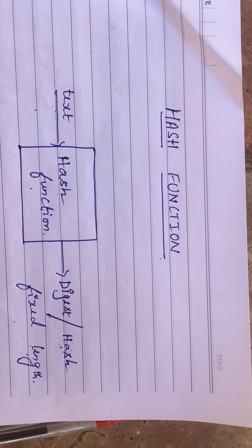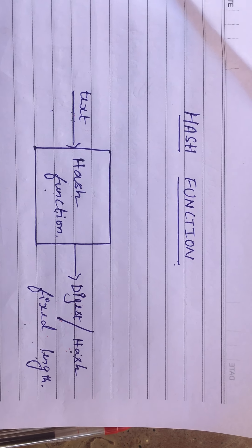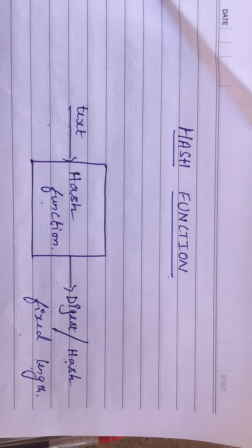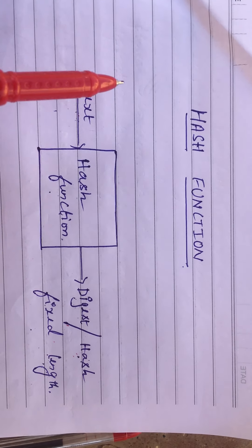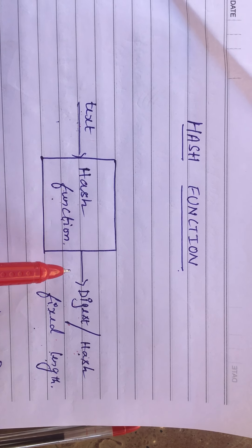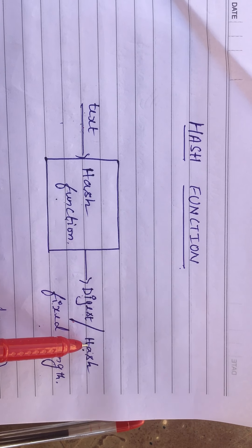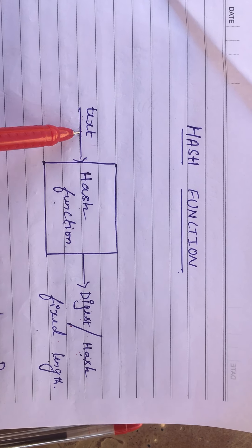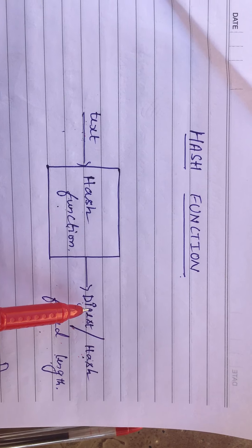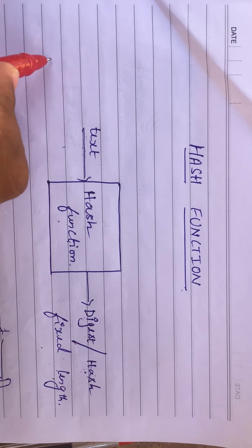In the last class we studied about hash functions. Today we are going to see the properties of hash functions. As a recap: we pass a text as input to a hash function, and this hash function gives a string of fixed length called a digest or hash value. It is very easy to convert text to a digest, but very difficult to convert back from a digest to plain text.